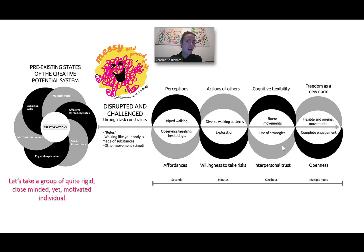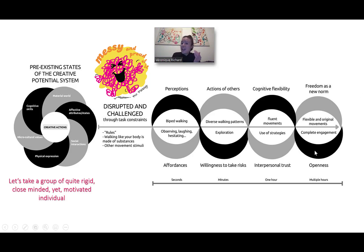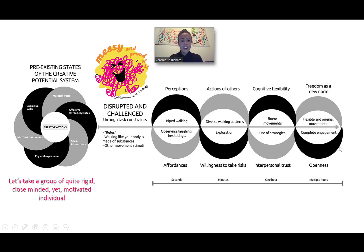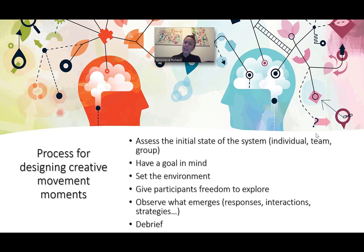Other people observe and that gives a kind of permission for others to do the same. Because no one laughed at the first person, interpersonal trust in the group increases. This is not just after one movement improvisation activity — it's maybe after one hour that you start feeling trust emerge. People start exploring strategies to navigate the different movement activities. We see willingness to take risk, people becoming more flexible, more open, and by the end of a two-hour session — or across multiple sessions — freedom becomes a new norm of the group.